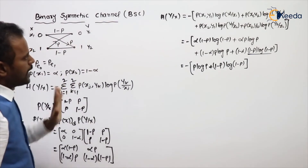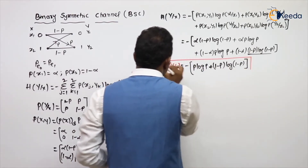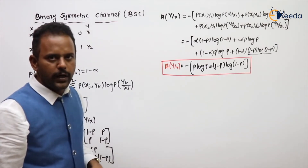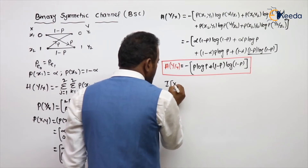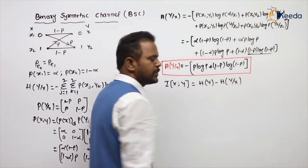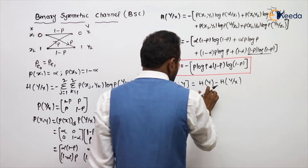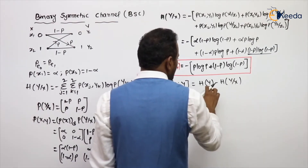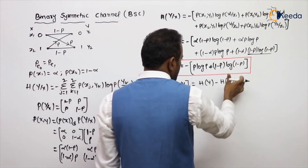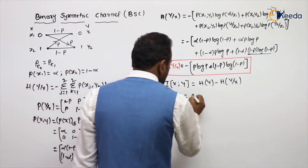Remember this result directly, as it is needed for solving problems in GATE and similar exams. Once you know the entropy H(Y|X), calculate the mutual information: I(X;Y) = H(Y) − H(Y|X), or equivalently H(X) − H(X|Y). To find channel capacity we need to maximize the mutual information, which means maximizing H(Y).